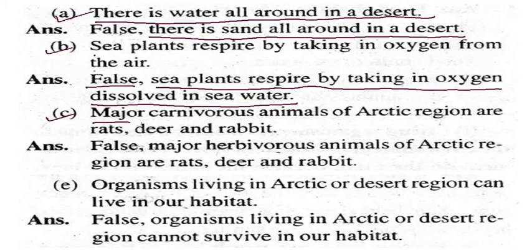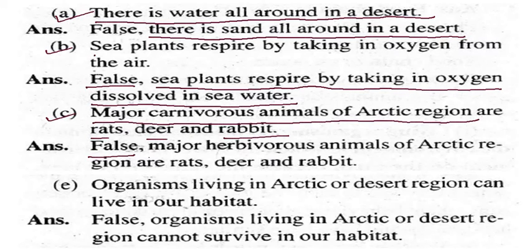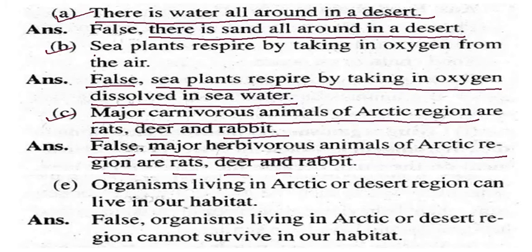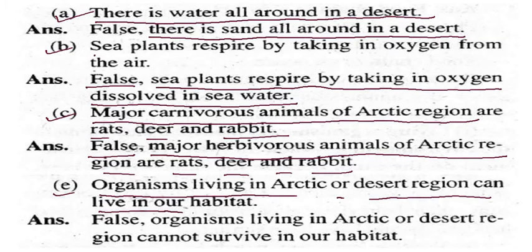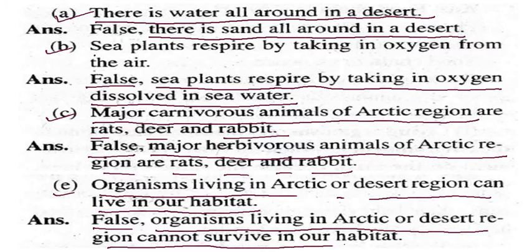The next statement — carnivorous animals of Arctic regions are red deer and rabbits — is incorrect. The correct answer is: herbivorous animals of Arctic regions are red deer and rabbits. Also, the statement 'organisms living in Arctic or desert regions can live in our habitat' is false. The correct statement is: organisms living in Arctic or desert regions cannot survive in our habitat.